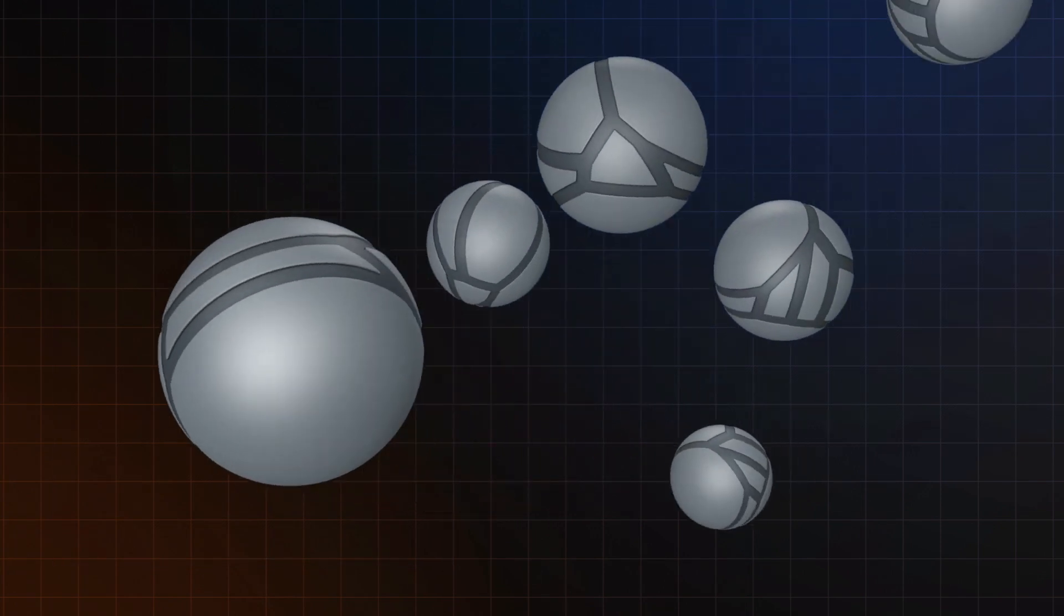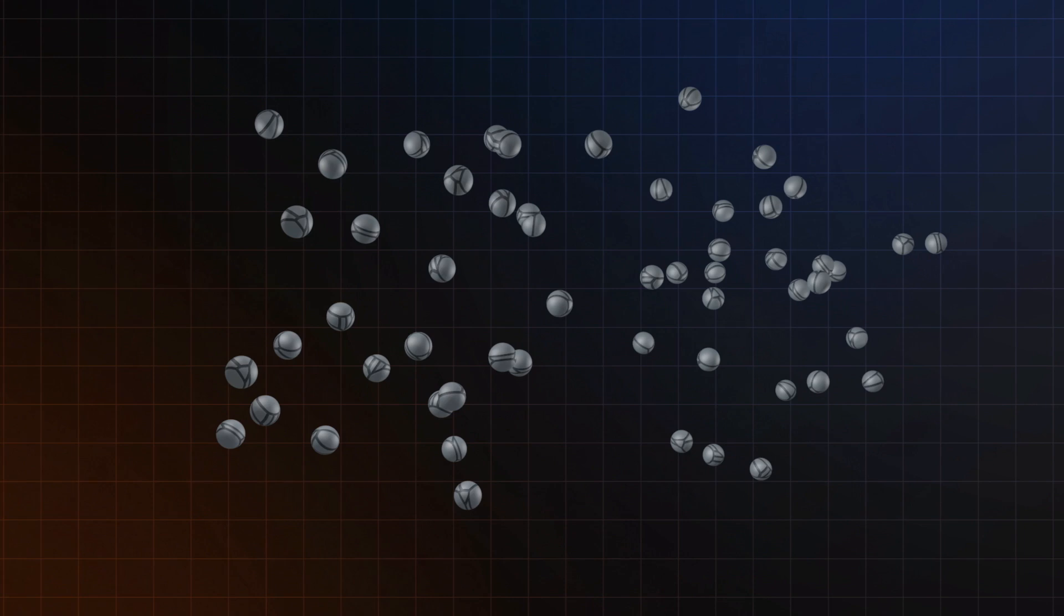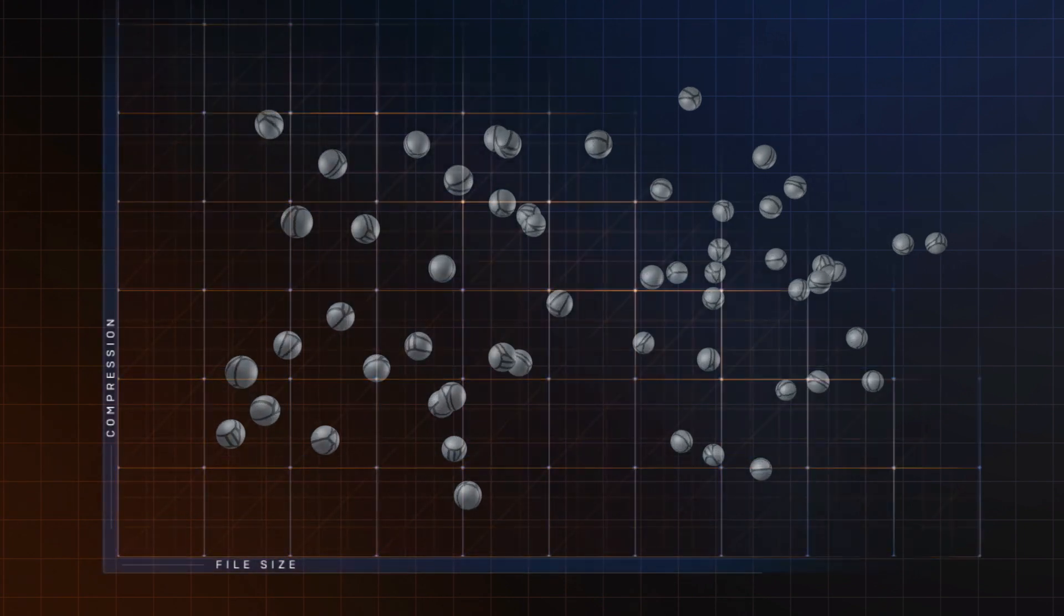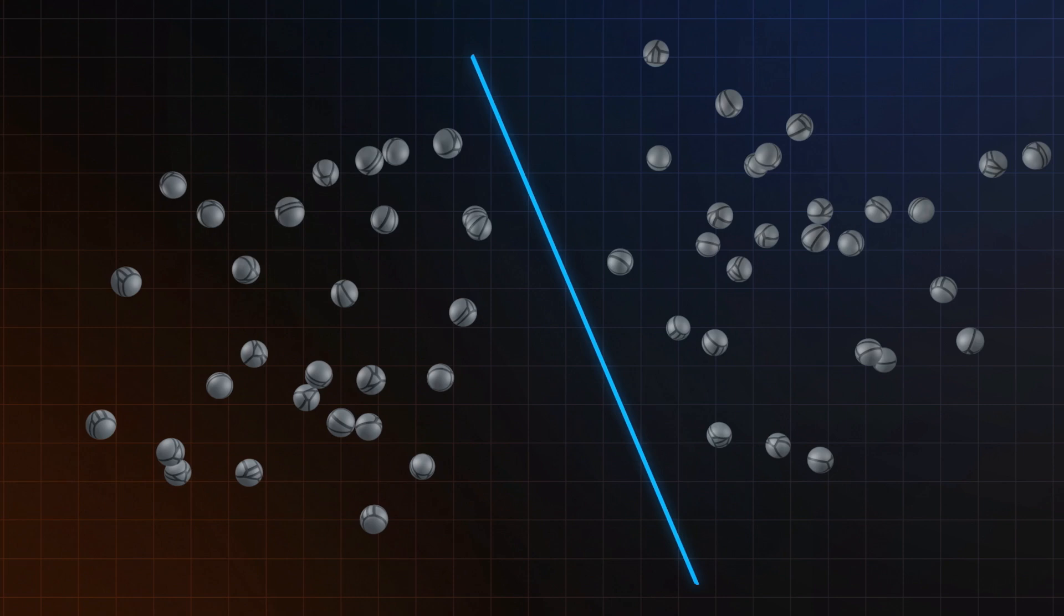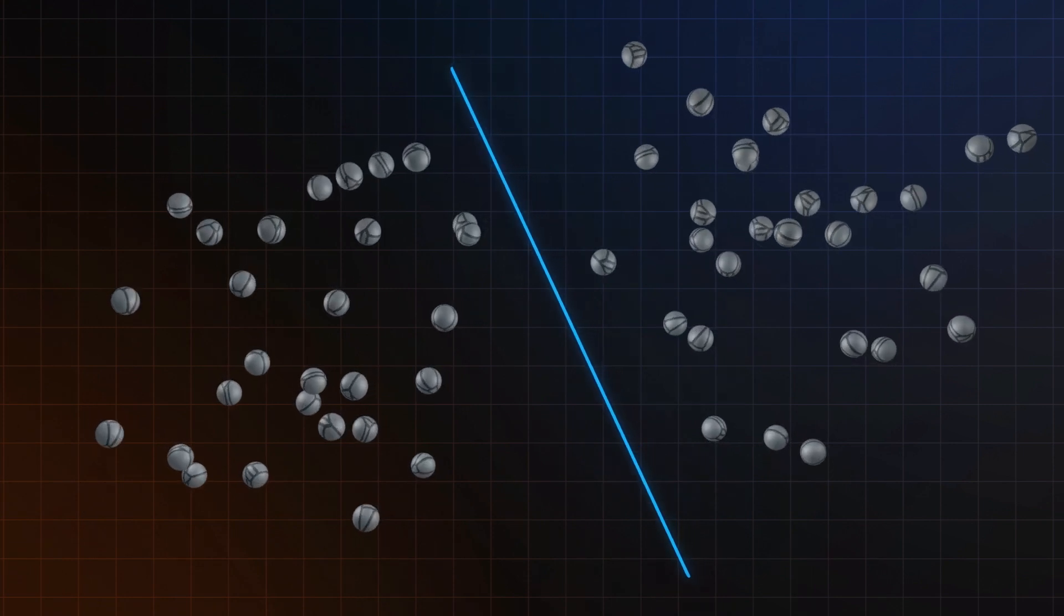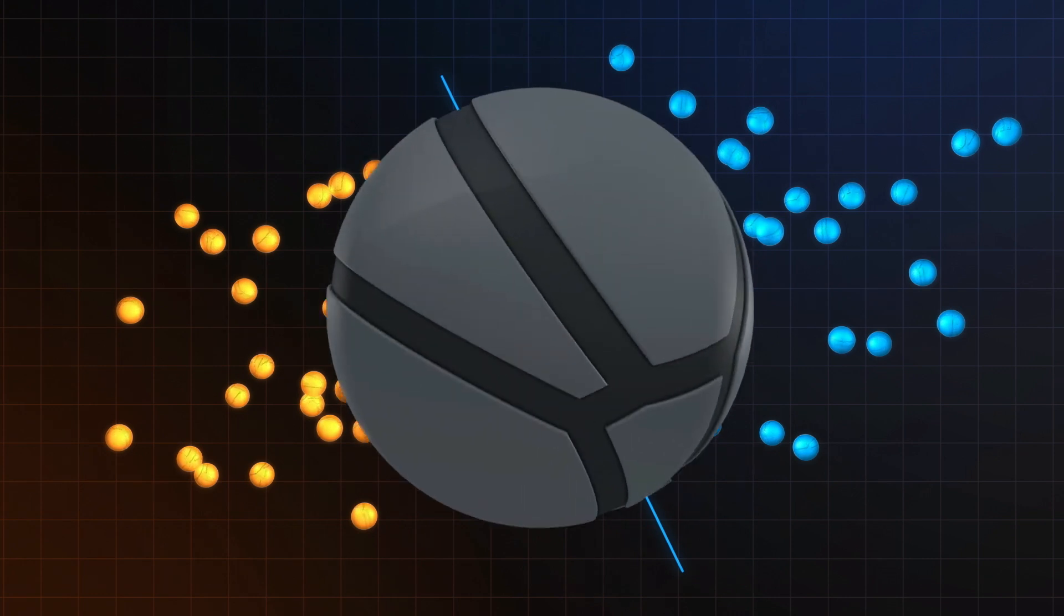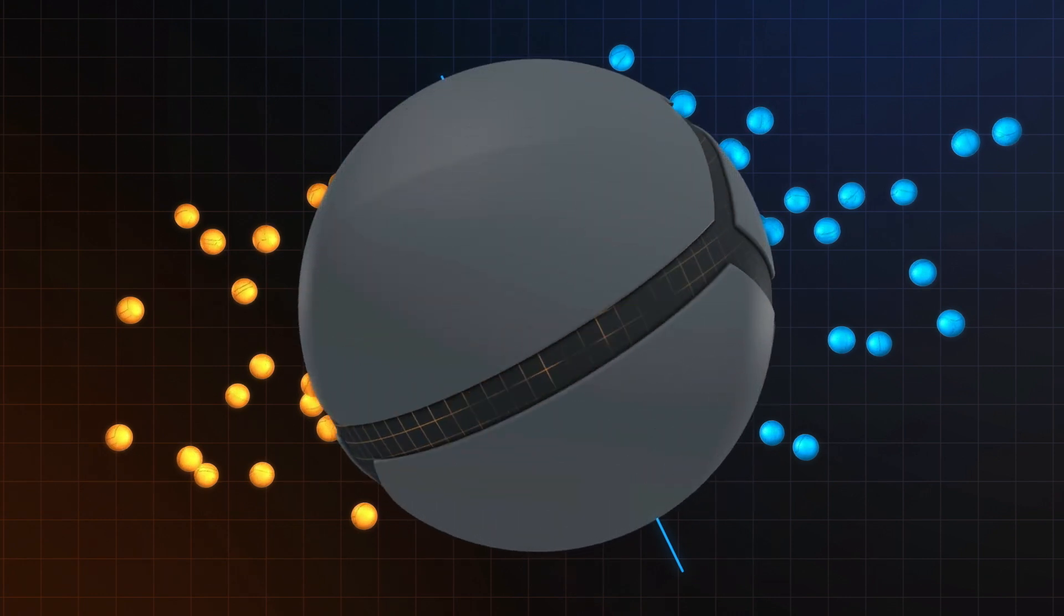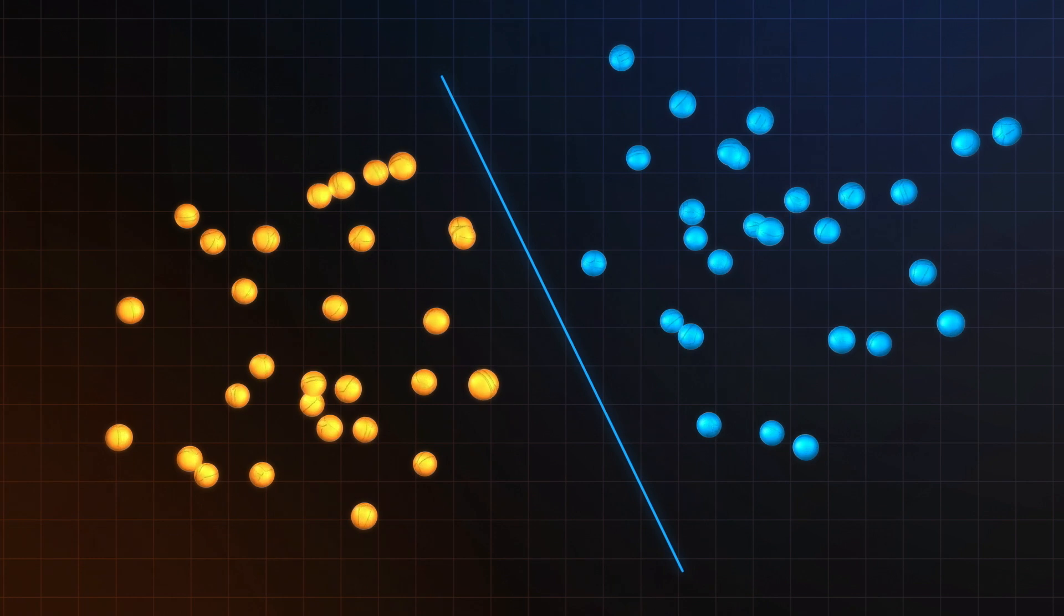First, we train the machine learning model to recognize these two attributes. The model then categorizes a series of test files on an X-Y axis and establishes a boundary between the two groups. It recognizes that everything on one side of the boundary is malicious, everything on the other side is benign. A new file is then introduced into the model, which is correctly identified as malware based on which side of the boundary it falls on.